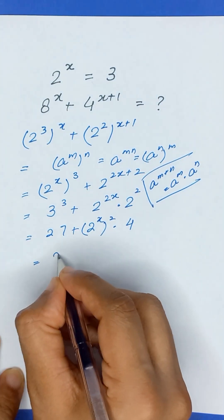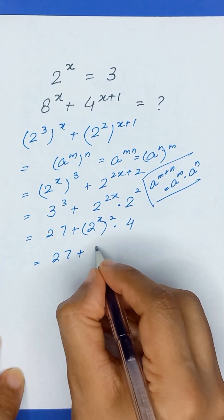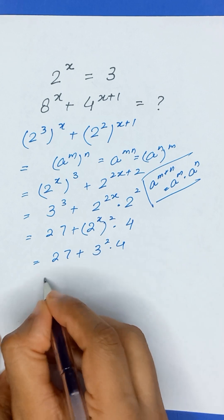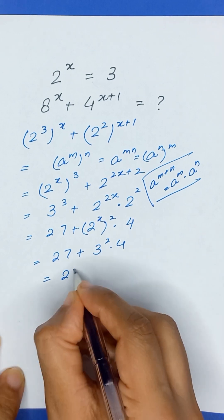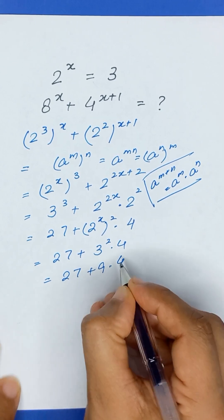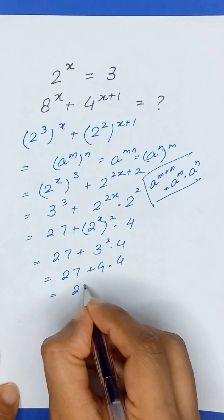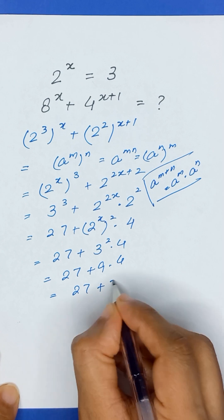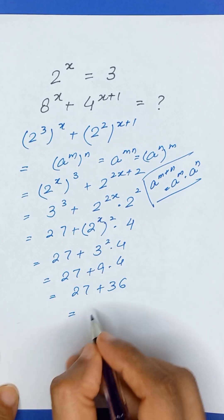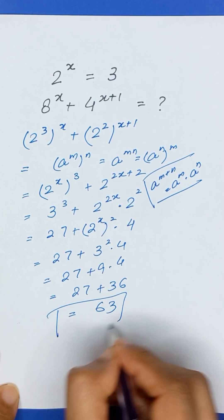Since 2 to the power x is equal to 3, it becomes 27 plus 3 squared times 4, which is 27 plus 9 times 4, and 9 times 4 equals 36. So 27 plus 36 is equal to 63. Thanks for watching.